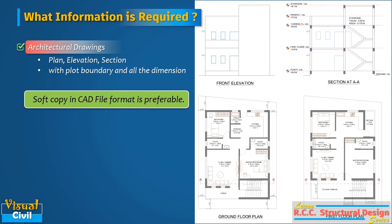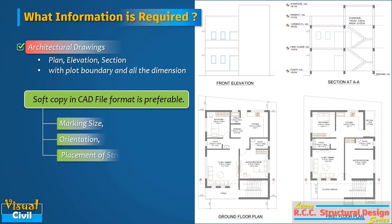If a hard copy is available, then it is better to convert it to a CAD file. This will be helpful in marking the size, orientation, and placement of various structural elements on the architectural drawing, and is also useful in drafting of the structural drawings.